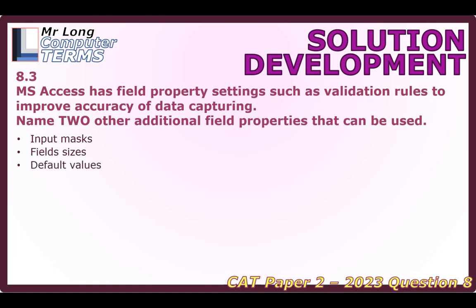Default values help prevent people from having to type too much. If there's a field that is always the same for the majority of cases, it's useful to set a default value. For example, in a school situation, the default value for grade could be 8, since most new students would be grade 8. You can still change it. Also, lookup values let you limit input to a drop-down list of options, and formatting helps ensure data is in the correct format — for example, formatting grades as integers.